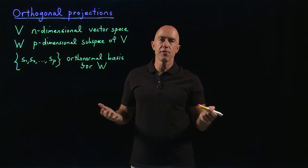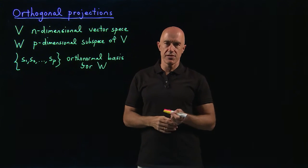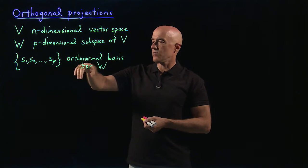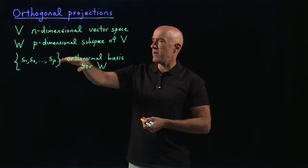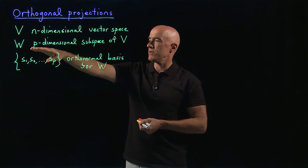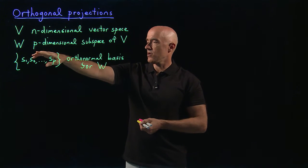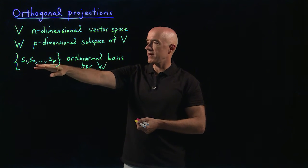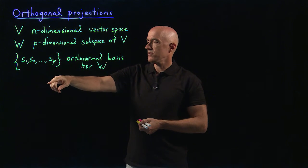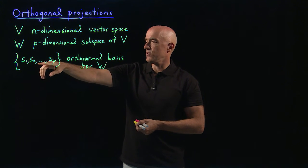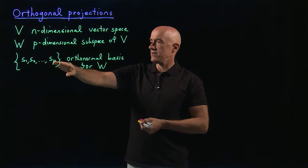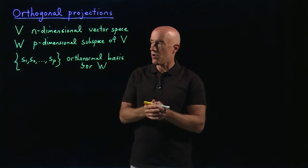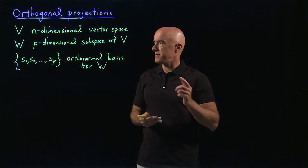Using a process such as the Gram-Schmidt process, we can construct an orthonormal basis for this subspace W. It's p-dimensional, so there are p basis vectors. Let's write s1, s2 through sp as the orthonormal basis vectors for W.